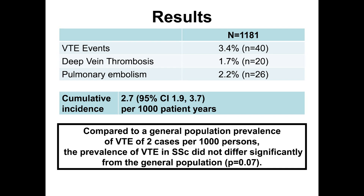In our study, we evaluated 1,181 subjects, of whom 3.4% developed a venous thromboembolic event, 1.7% developed deep vein thrombosis, and 2.2% developed pulmonary embolism. This gave a cumulative incidence of 2.7% per 1,000 patient years. We found that compared to a general population prevalence of VTE of 2 cases per 1,000 person years, the prevalence of VTE in systemic sclerosis was not statistically significantly different.